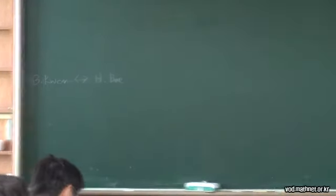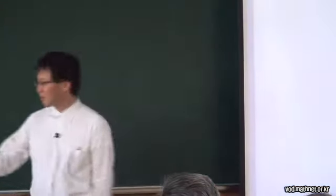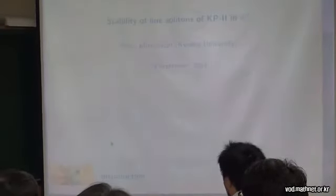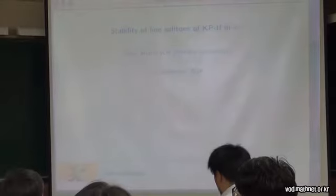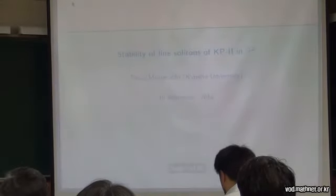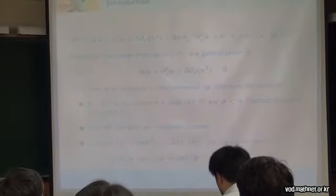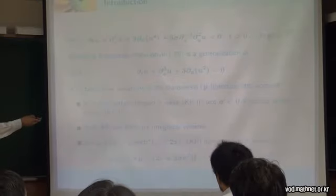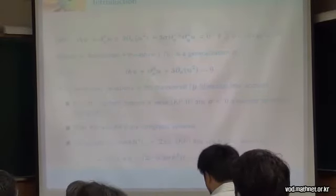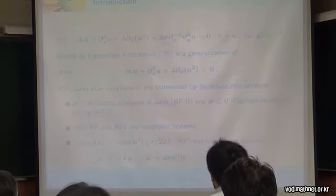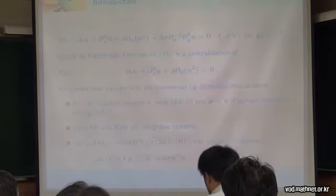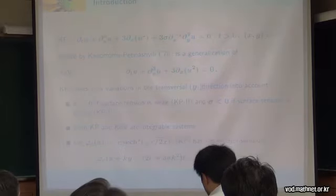Today I'm going to talk on stability of line solitons of KP2. The KP2 equation was derived by Russian physicist Kadomtsev in 1970, and the equation is a generalization of the KdV equation.